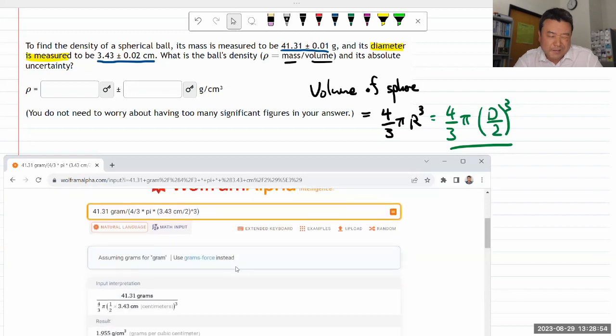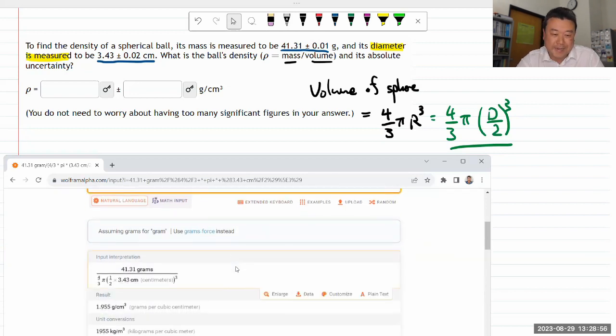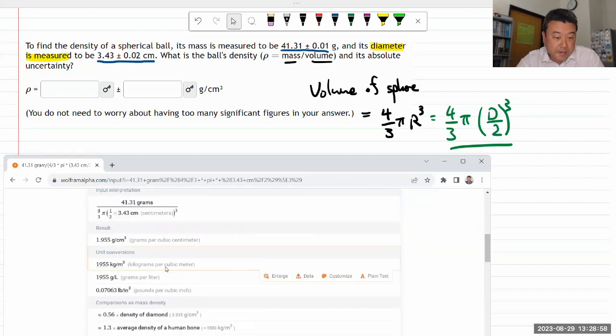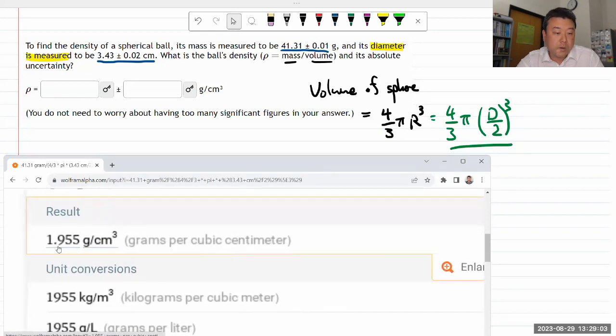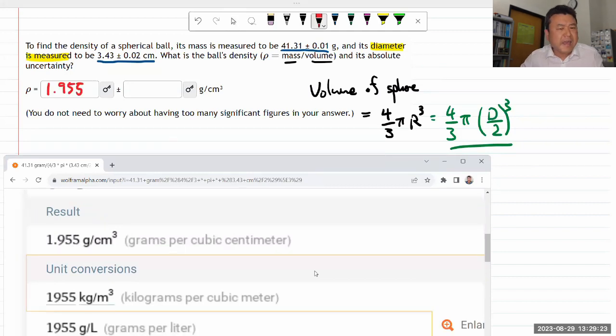In this case it doesn't matter because we're using the same set of units. It's giving 1.955 grams per cubic centimeter. I can imagine a lot of people getting stuck in this second part—how do you calculate the uncertainty?